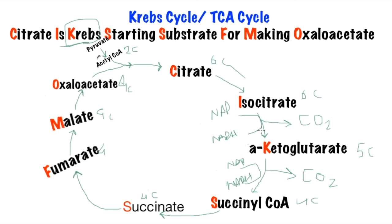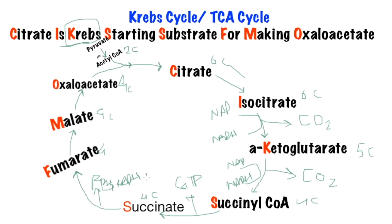Since it is removing 1 hydrogen, the enzyme here will be a dehydrogenase — isocitrate dehydrogenase, because it's taking 1 hydrogen from isocitrate. And alpha-ketoglutarate dehydrogenase, because it's removing 1 hydrogen from alpha-ketoglutarate. Then from succinyl-CoA to succinate we get 1 GTP molecule, and from succinate to fumarate we get FAD converted into FADH2.